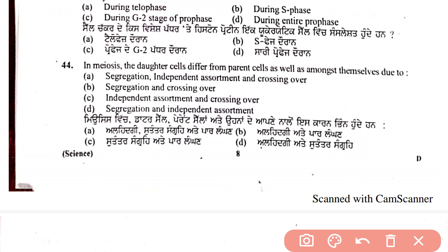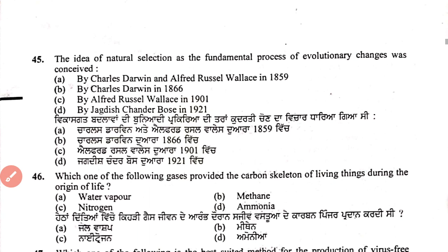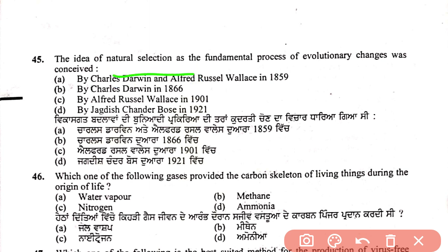The idea of natural selection as the fundamental process of evolutionary change was conceived by whom? Natural selection means that organisms that adapt to nature will survive. This idea was given by Charles Darwin along with Alfred Russel Wallace in 1855.